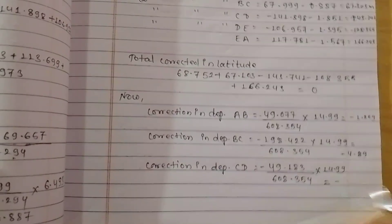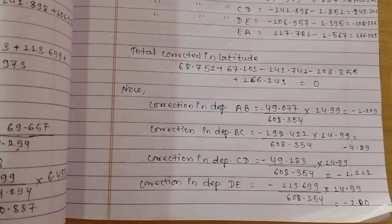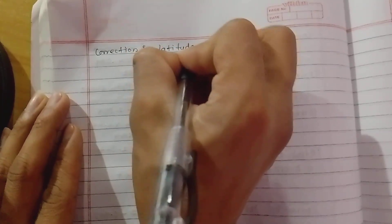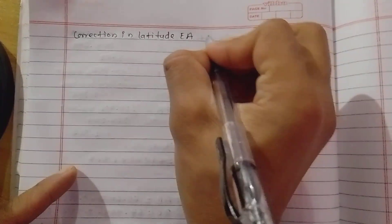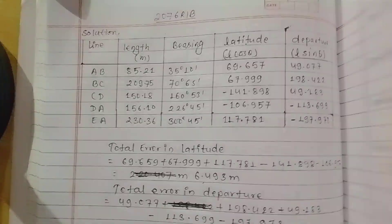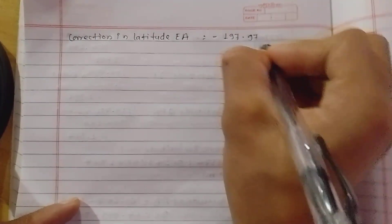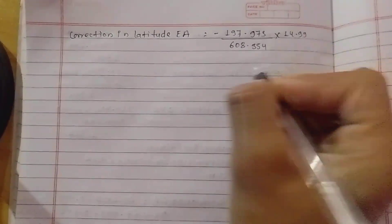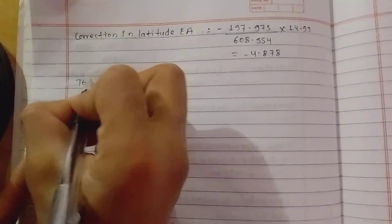Correction in departure for EA. Equal in sum: minus 197.973, divided by total sum 608.354, multiplied by total error 14.99. Solving — total correction in departure calculated.